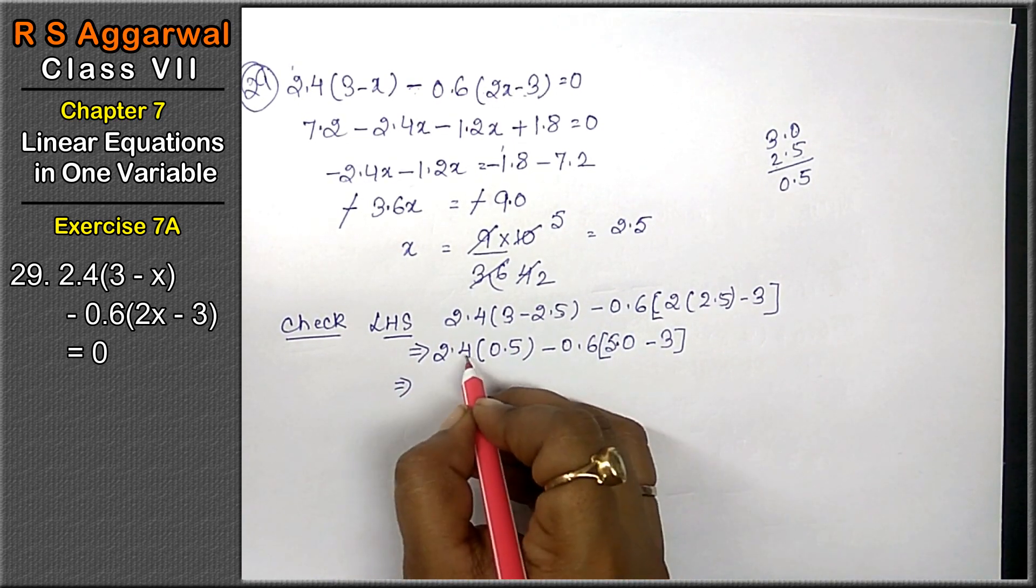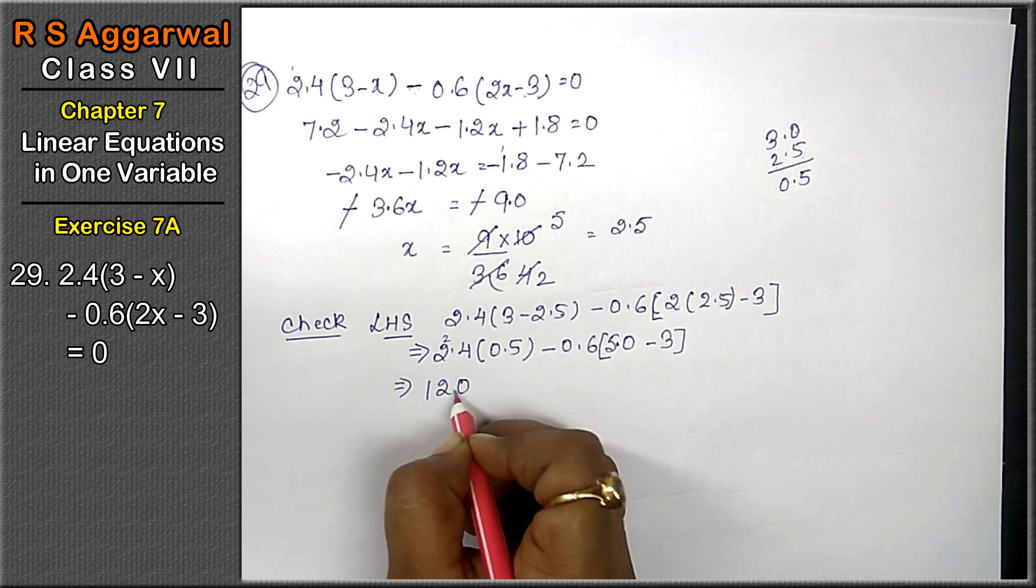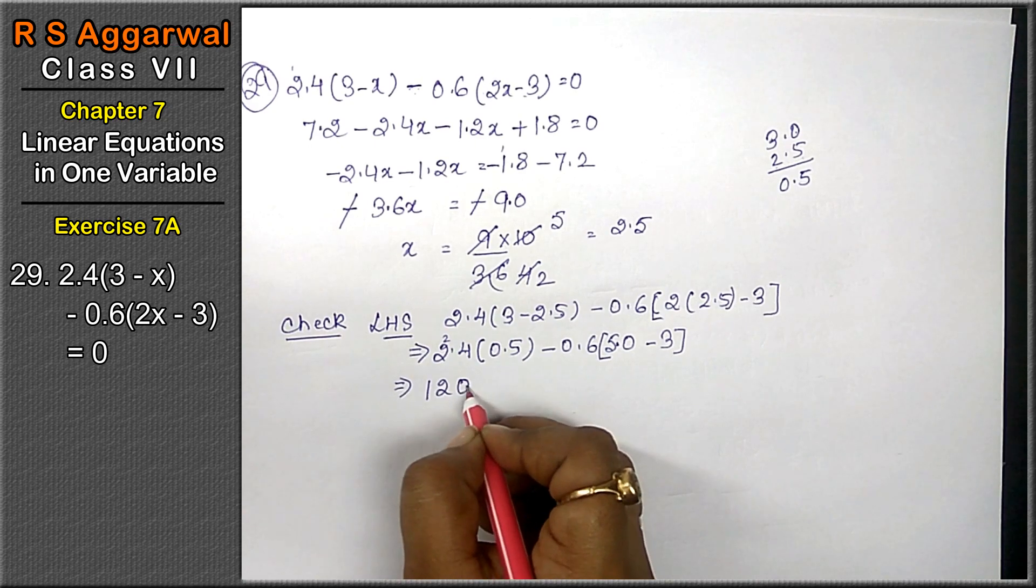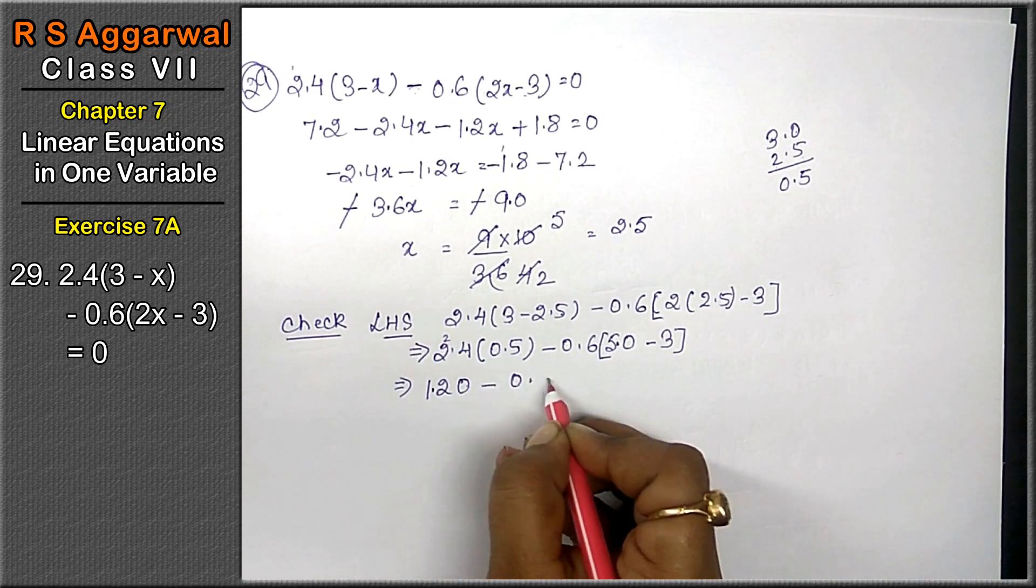Now 5 times 4 is 20, 2, 5 times 2 is 10, 11, 12. Now 1 and 2, 2, point after here, point here, minus 0.6.